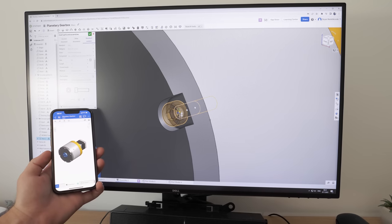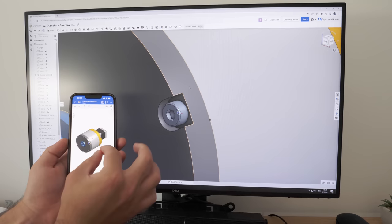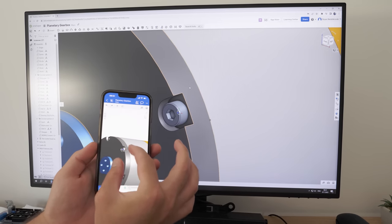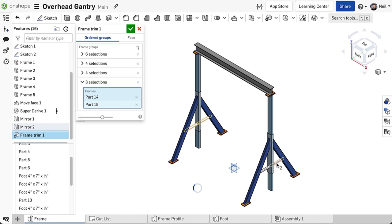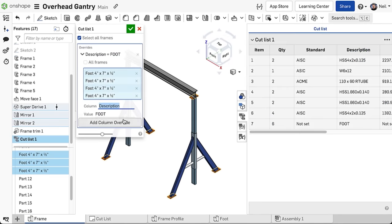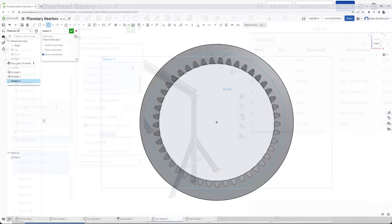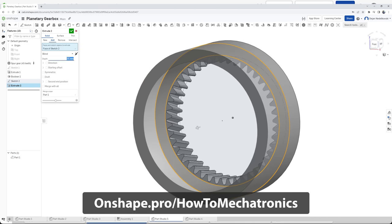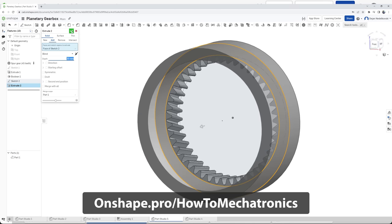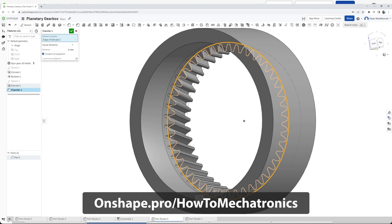Onshape also works in a browser, which means it works across all operating system and devices, including iOS and Android devices. Whether your company uses Solidworks already and you are looking to modernize your engineering and design, or if you just want to try it out for at home use, you can create a free Onshape account at onshape.pro/howtomechatronics. You can find the link in the description of the video. Thanks Onshape for sponsoring educational content like this.